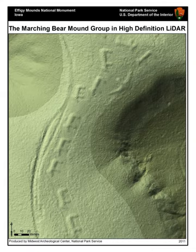LiDAR uses ultraviolet, visible, or near-infrared light to image objects. It can target a wide range of materials, including non-metallic objects, rocks, rain, chemical compounds, aerosols, clouds, and even single molecules. A narrow laser beam can map physical features with very high resolutions — for example, an aircraft can map terrain at 30 cm resolution or better. The essential concept of LiDAR was originated by A. Singh in 1930, who envisaged the use of powerful searchlights to probe the atmosphere. LiDAR has since been used extensively for atmospheric research and meteorology.